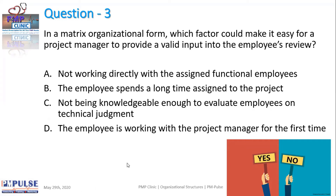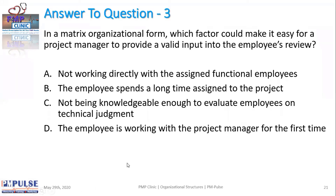So what does this question actually say? In a matrix organizational form — just the word matrix basically means balanced matrix, 50-50. Which factor could make it easy for a project manager to provide a valid input into the employee's review? Option A: not working directly with the assigned functional employees — that does not even make sense. Option B: the employee spends a long time assigned to the project — okay, this makes sense.